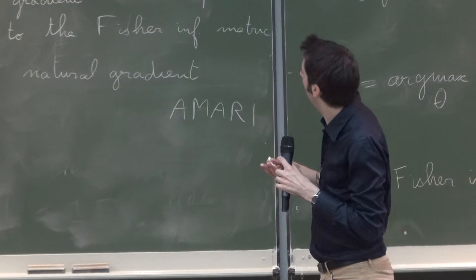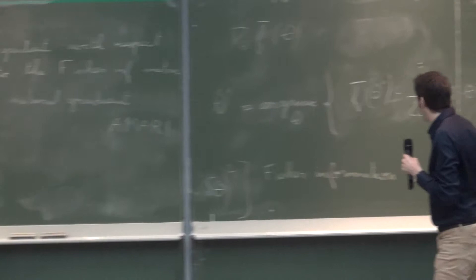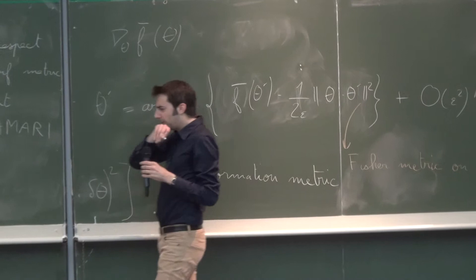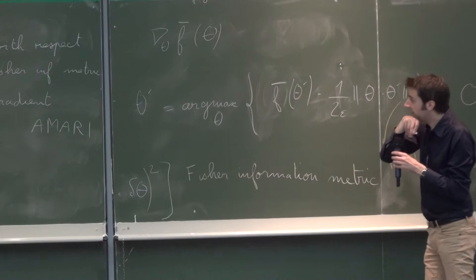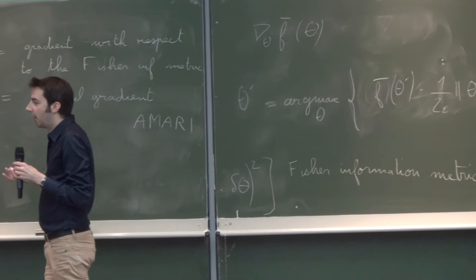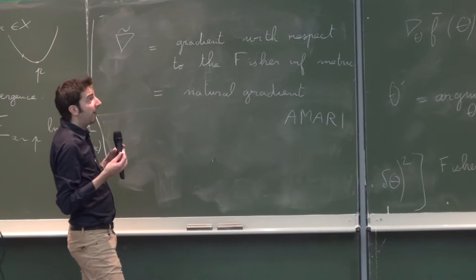The Fisher information metric itself is much older. As the name indicates, I think it was Rao actually rather than Fisher who defined it — who realized that you have a canonical distance between any two probability distributions, in 1945.